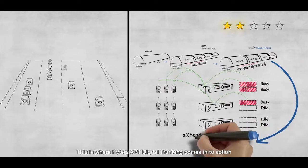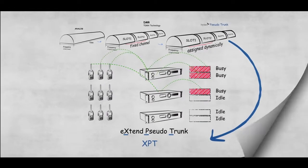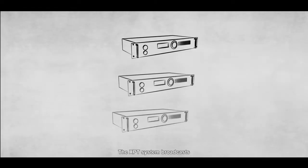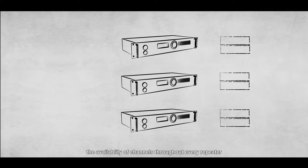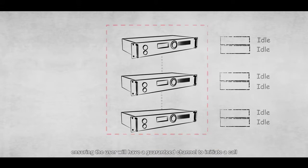This is where Hytera XPT Digital Trunking comes into action. So how does it work? The XPT system broadcasts the availability of channels throughout every repeater, ensuring the user will have a guaranteed channel to initiate a call.